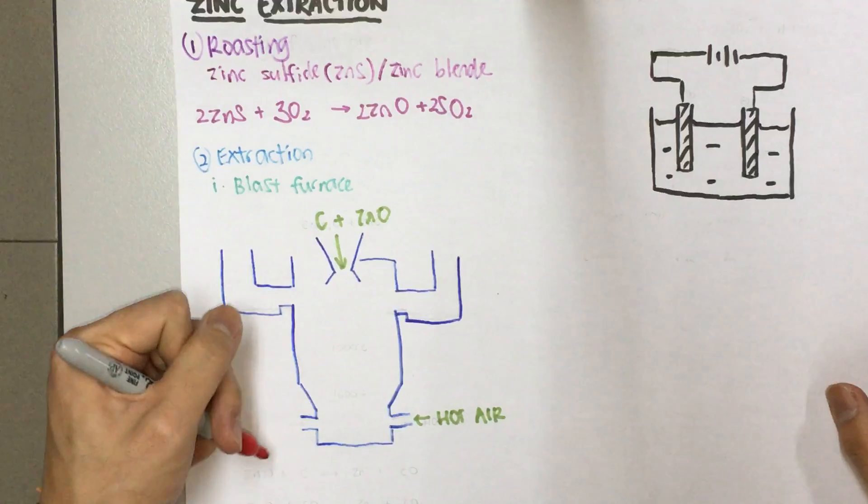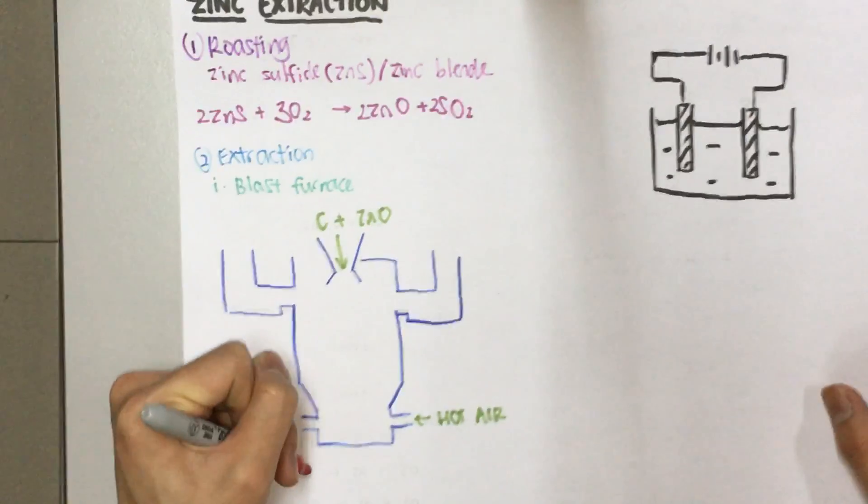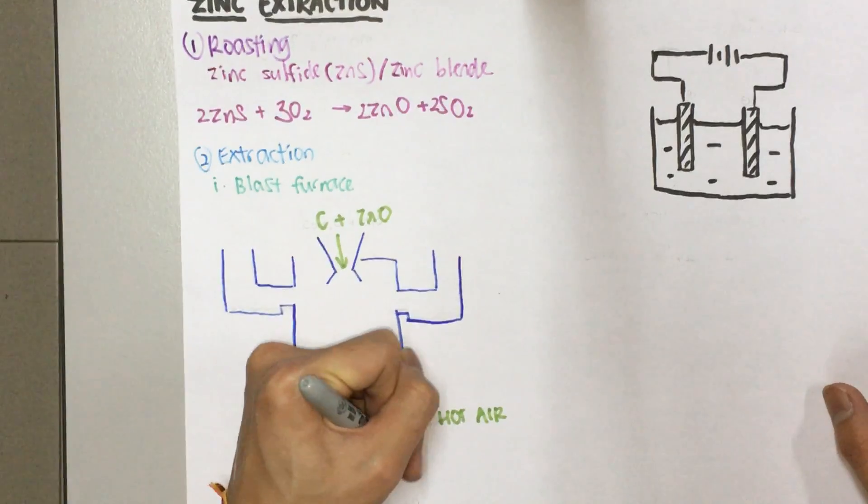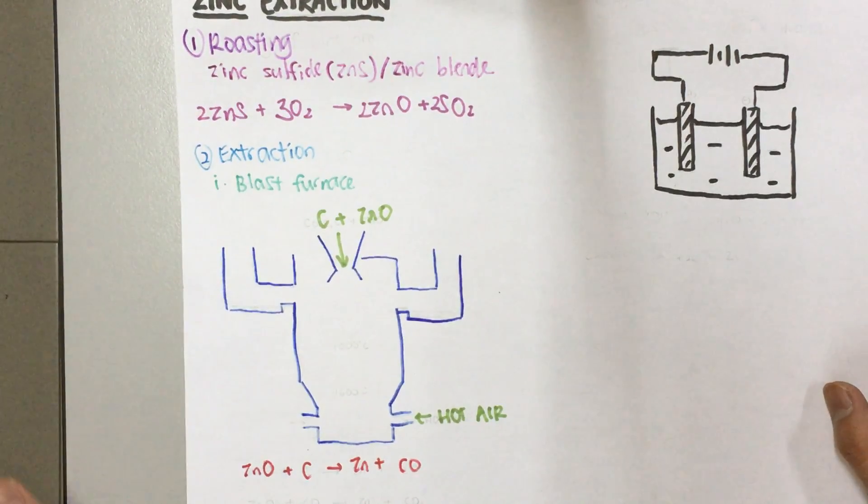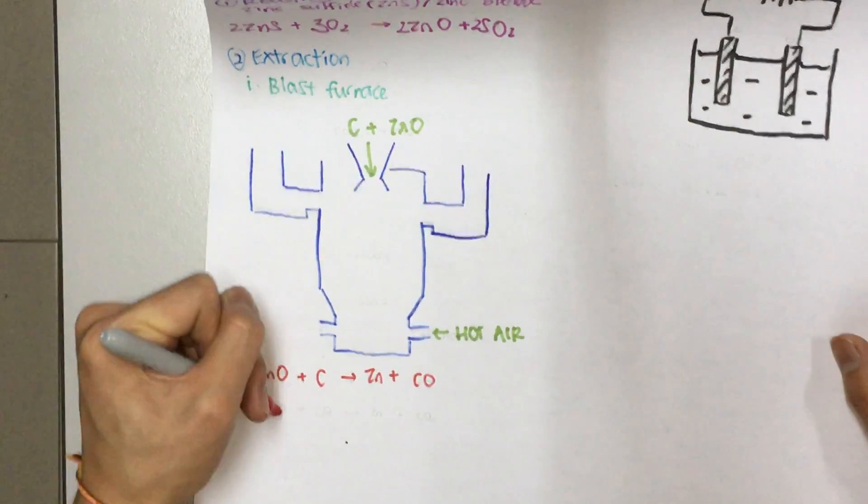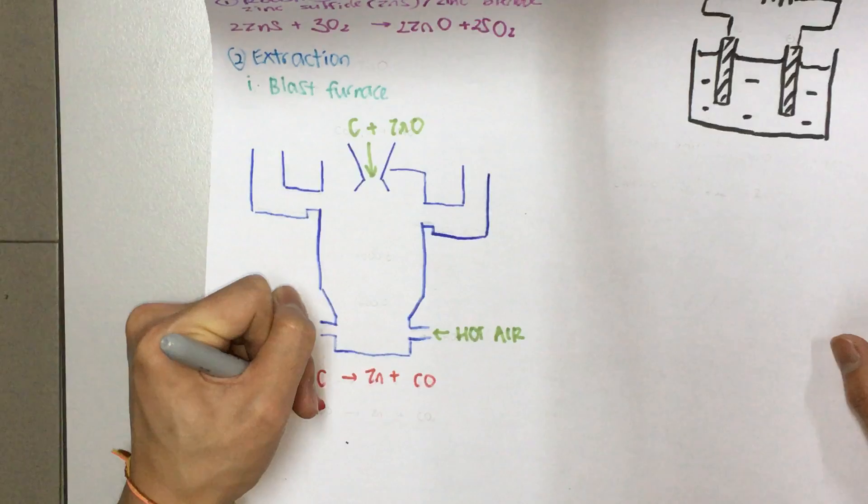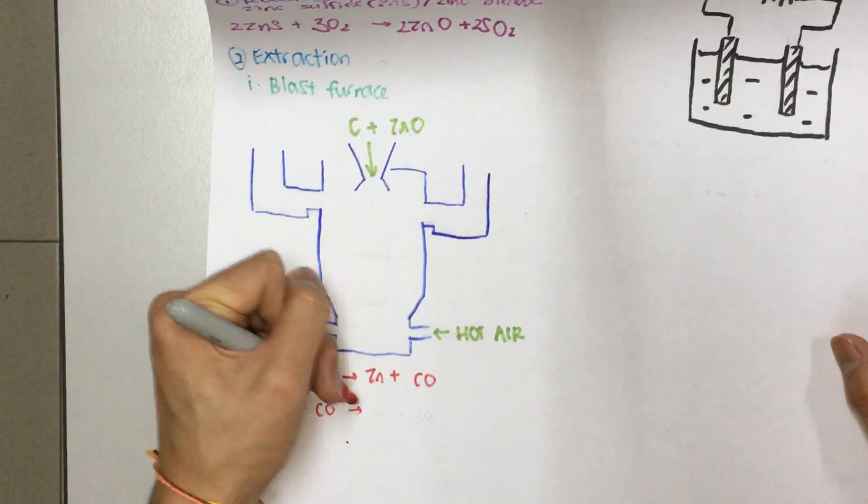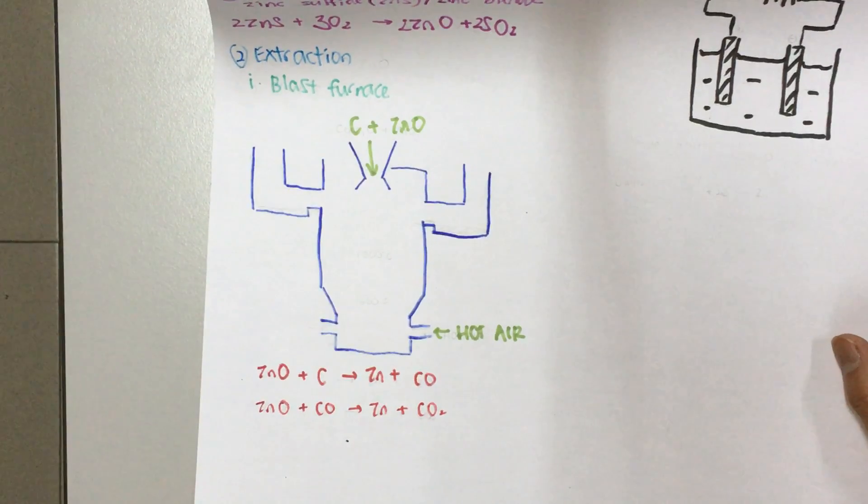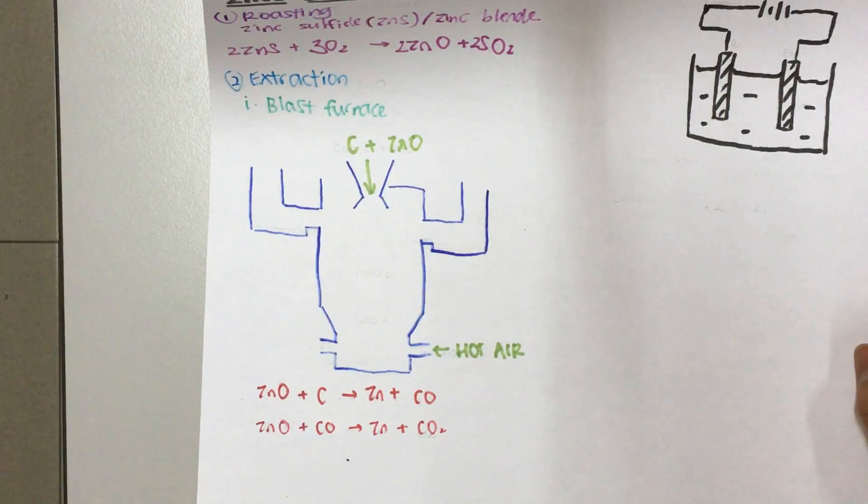Zinc oxide can react with carbon, or coke, to get zinc and carbon monoxide. What can also happen is, zinc oxide can also react with the carbon monoxide to produce zinc and carbon dioxide. So that's two steps of it.